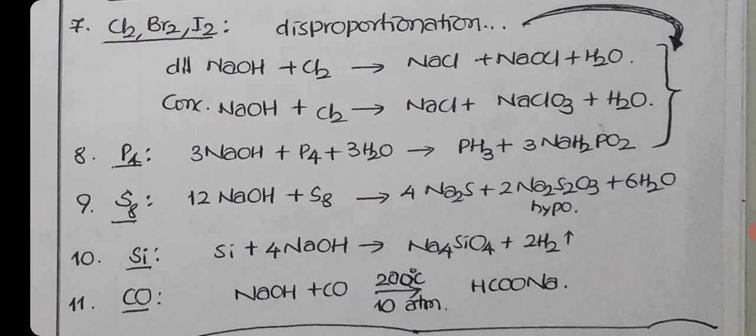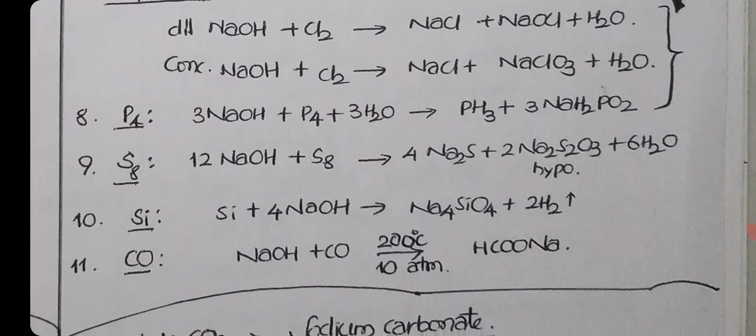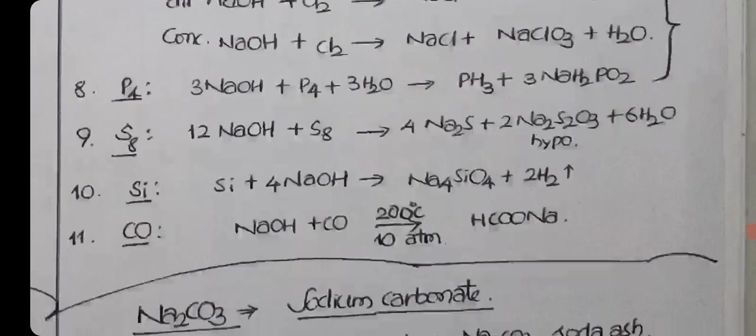With phosphorus, NaOH plus phosphorus gives PH3 and NaH2PO2, this is also disproportionation reaction. PH3 is phosphine. NaH2PO2 is sodium hypophosphite. When it reacts with sulfur, Na2S and Na2S2O3 are formed. Na2S2O3 is hypo, Na2S is sodium sulfide. With silicon, sodium hydroxide reacts and releases hydrogen gas. With carbon monoxide, it forms HCOONa, sodium formate. Very special reaction.